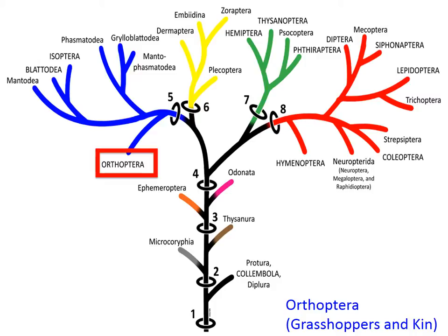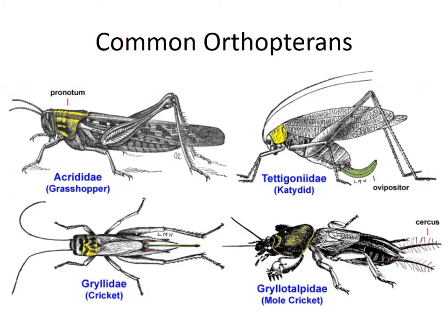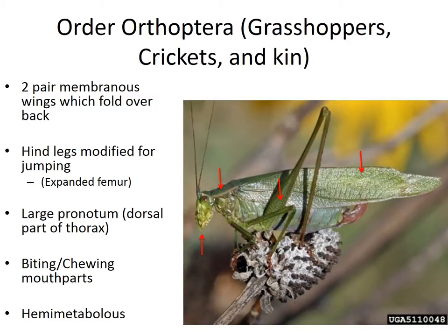The first order that we're going to talk about is Orthoptera, or grasshoppers and their kin. You've probably seen members of the order Orthoptera before — you're probably fairly familiar with this order. They're things such as grasshoppers, katydids, and crickets. The order Orthoptera — grasshoppers, crickets, and their kin — are typified by a couple of different characters.